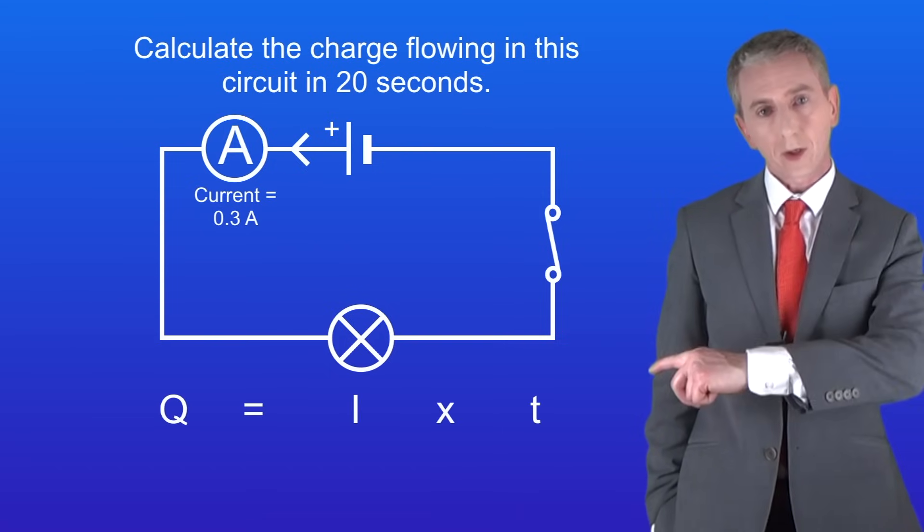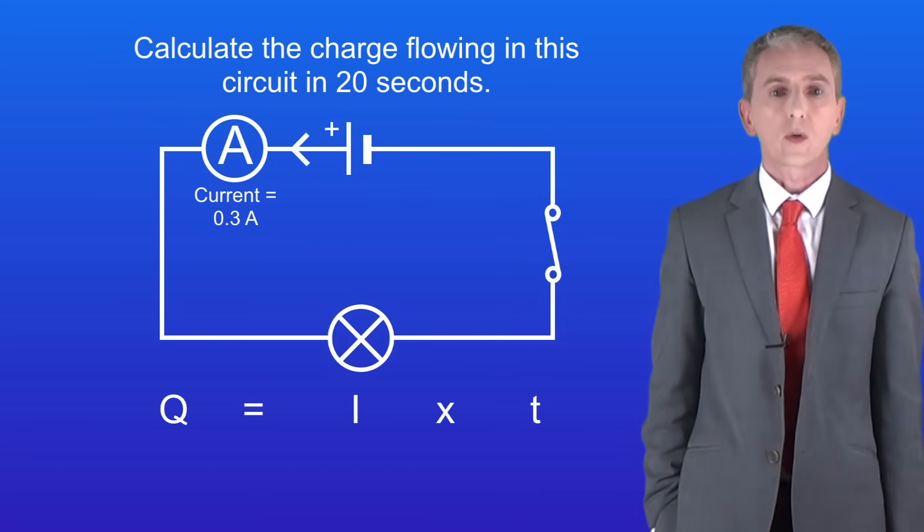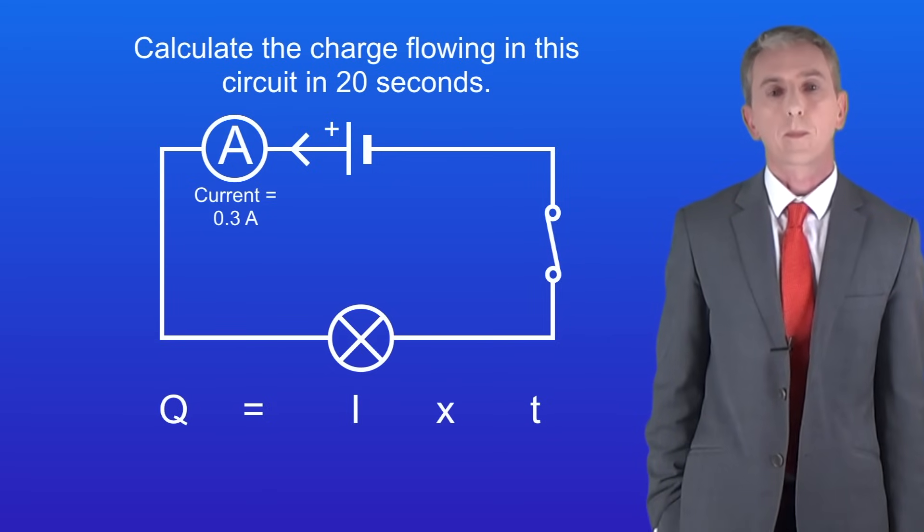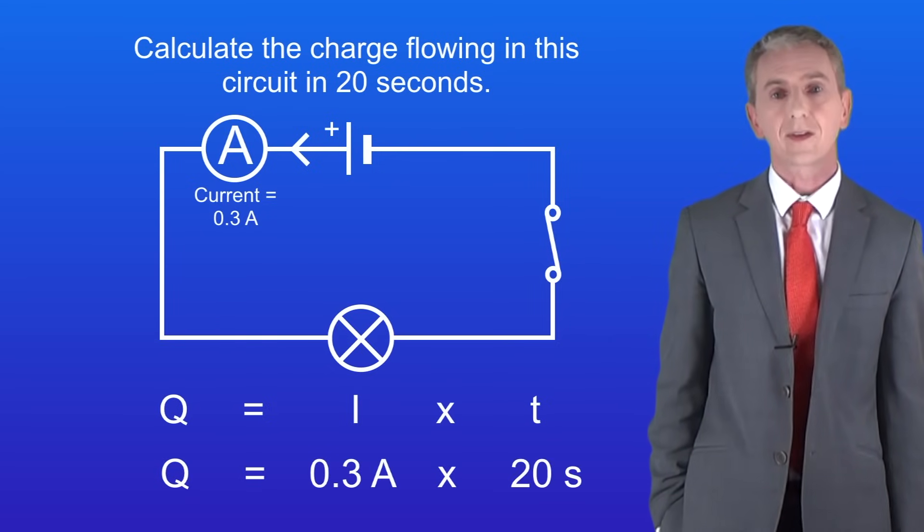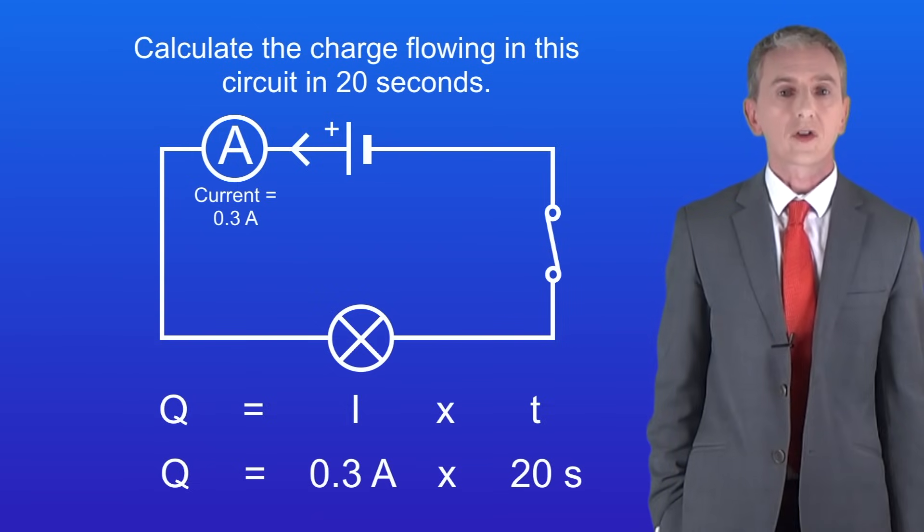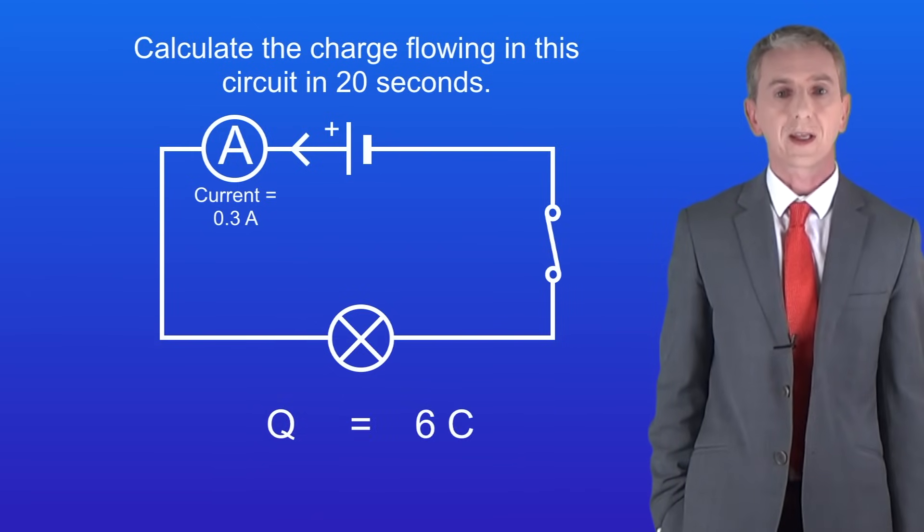Okay so here's the equation. The charge flow equals the current multiplied by the time. So the current is 0.3 amperes and the time is 20 seconds. Putting these into the equation gives us a total charge flow of 6 coulombs.